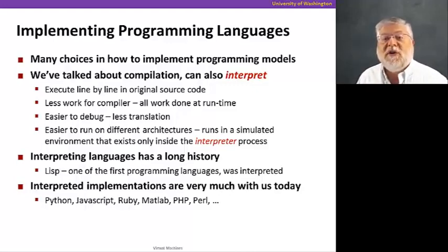Interpreted languages have a long history. Actually, one of the first programming languages, called Lisp, was an interpreted language. And there are still many interpreted implementations very much with us today, not only Java, but also Python, JavaScript, Ruby, Matlab, a lot of languages you might have heard of mentioned.